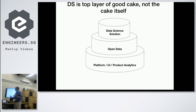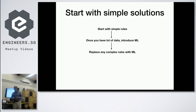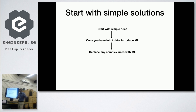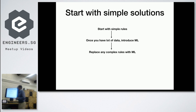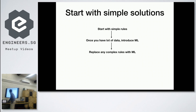For data science, start with simple solutions first. Initially you don't have data — and what data science will you do when your product has no data? Start with simple rules and simple solutions and keep collecting data, building up your data warehouse. Once you have a lot of data, introduce machine learning and analytics, and replace the complex rules in your product with machine learning. If a simple rule just works, leave it there — you don't need ML there.